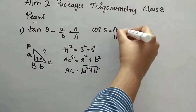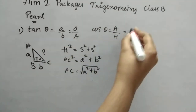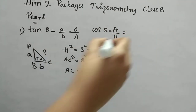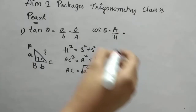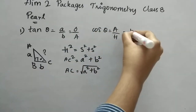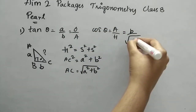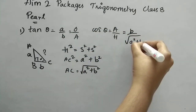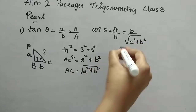Now in the cos θ formula, adjacent is B, so cos θ = B divided by √(A² + B²). That is option D.